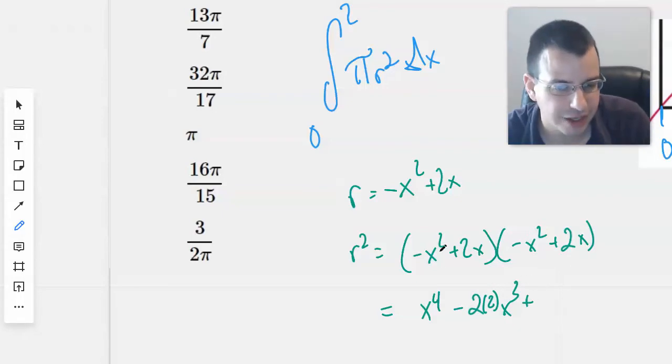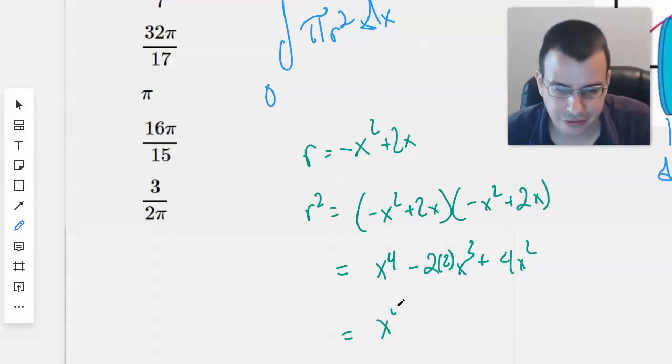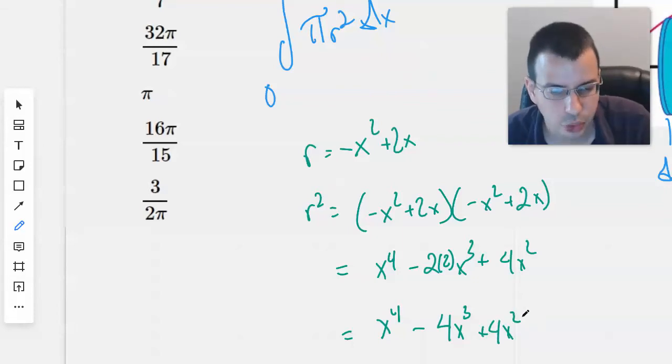Plus, so then, because we have negative x squared times this 2x, and we have 2x times that negative x squared. Then we'll have 2x times 2x will be 4x squared. So we have x to the fourth minus 4x cubed plus 4x squared. Okay.